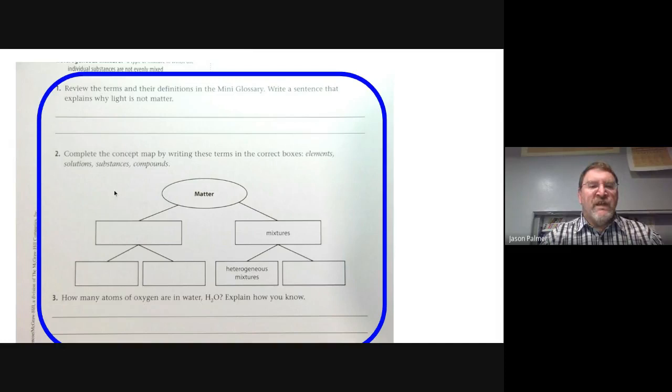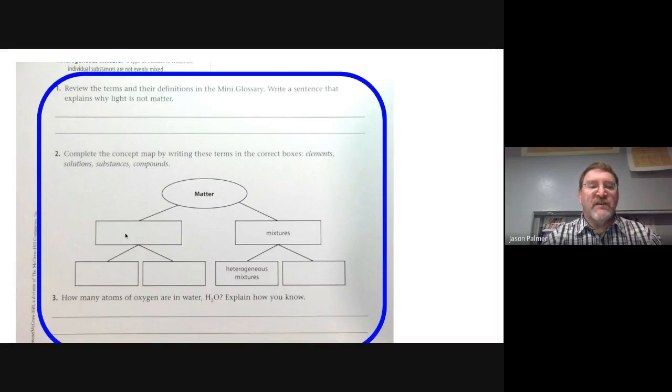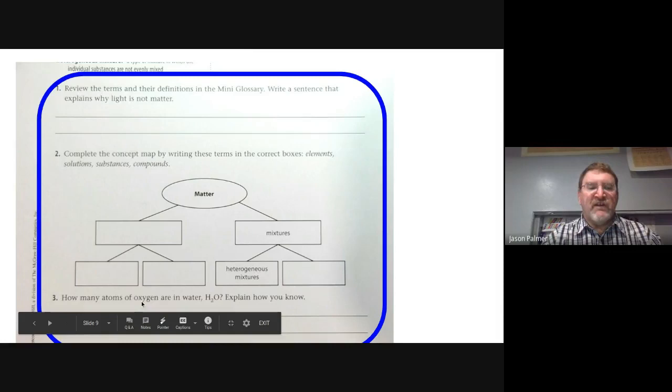And then on the next slide. So here are three questions. So up here on the concept map, you've got matter, mixtures, heterogeneous. So the other one over here is homogeneous mixture. Over here, you're going to have substances. Substances are either elements or compounds. And this last question. How many atoms of oxygen are in water, H2O? So I know it's three. Because I can read the chemical formula. Two hydrogens bonded to one oxygen.